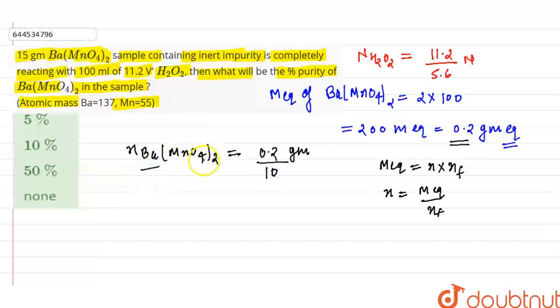Ba(MnO4)2, so number of moles will be 0.02 mole. Okay, now weight of Ba(MnO4)2 is, weight of Ba(MnO4)2 will be number of moles into molecular mass, 0.02 into molecular mass of Ba(MnO4)2 is 375 gram per mole, that will be